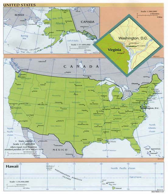Population centers may be organized into incorporated cities, towns, villages, and other types of municipalities. Municipalities are typically subordinate to a county government, with some exceptions. Certain cities, for example, have consolidated with their county government as consolidated city-counties.